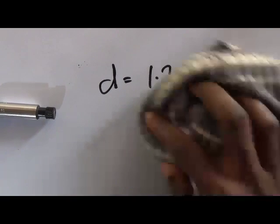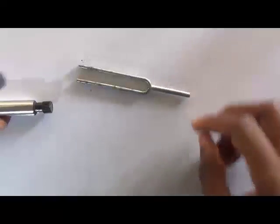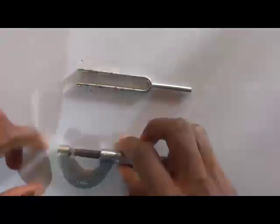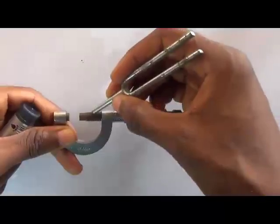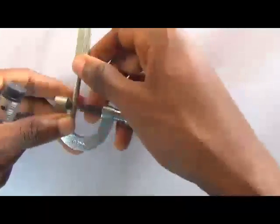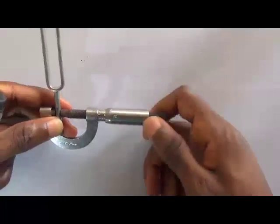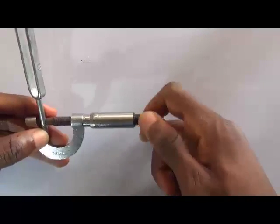Let's take another example. I am asked to read the diameter of the handle of this tuning fork. How would I do that? I will open the knob as usual. I will put the handle of the tuning fork between the spindle and the anvil and close the gap by turning the ratchet. It is completely closed.